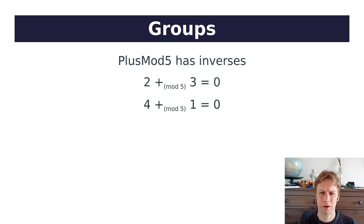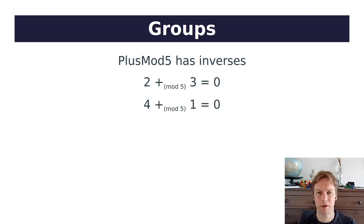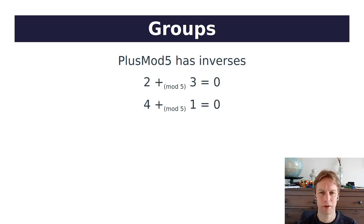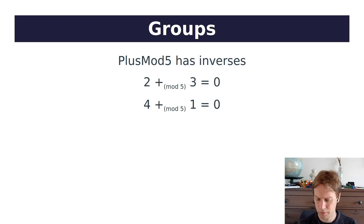Does plus mod 5 have inverses? Yes, but they don't look how you might imagine. You'd think minus 2 would be the inverse of 2, but minus 2 doesn't exist inside plus mod 5 — the only things in it are 0, 1, 2, 3, 4. But for every member, we can find a number that gets us back to 0. We can add 3 to 2 and get back 0, so the inverse of 2 is 3. Also, the inverse of 3 is 2, the inverse of 4 is 1, and the inverse of 0 is 0. So yes, everything has an inverse.